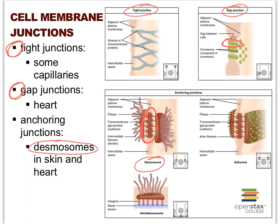Desmosomes cause cells to stay connected to one another, which is part of the reason why when you have a sunburn and your skin peels, it peels in big pieces — it's not like one cell falls off at a time.